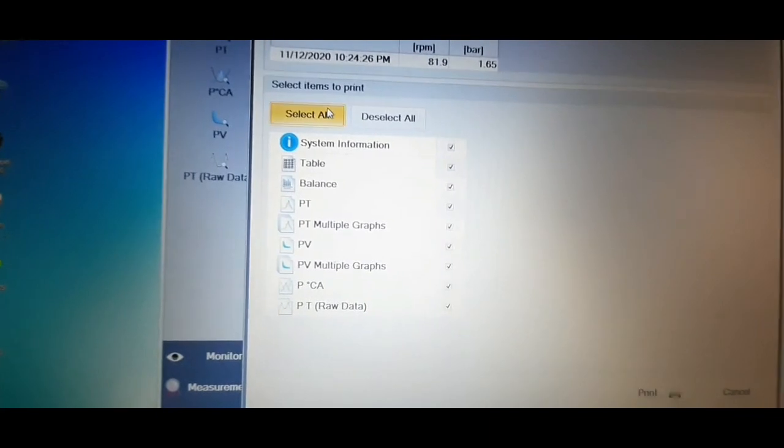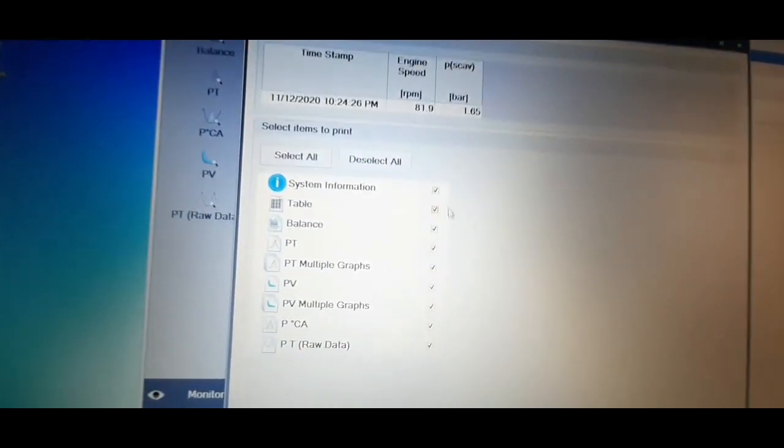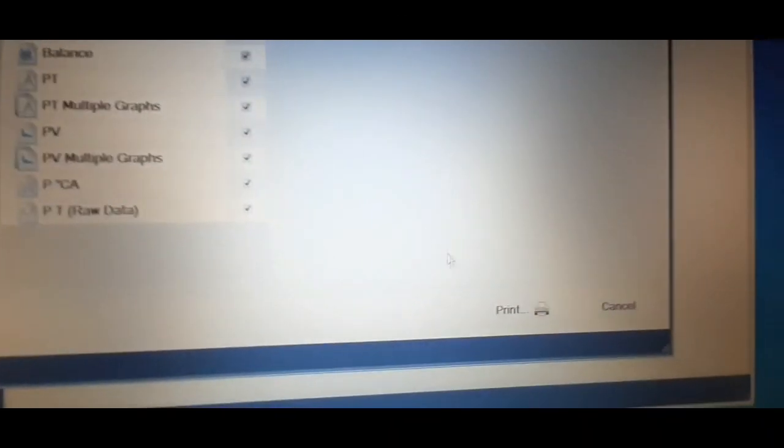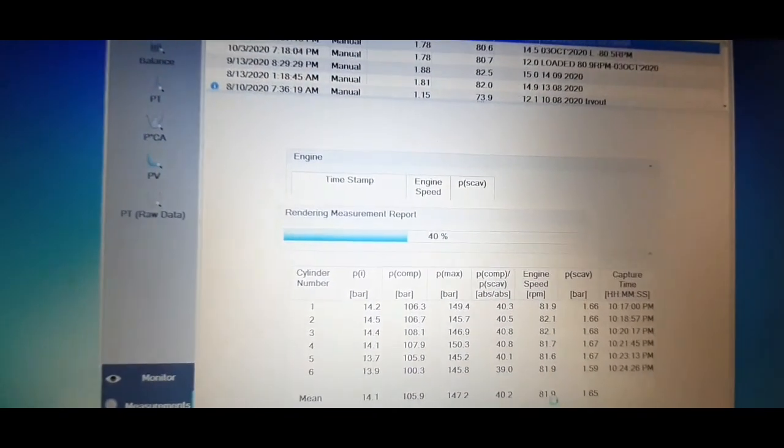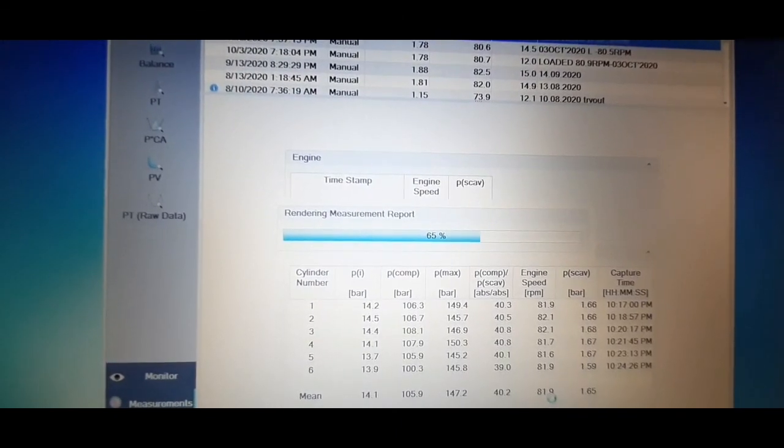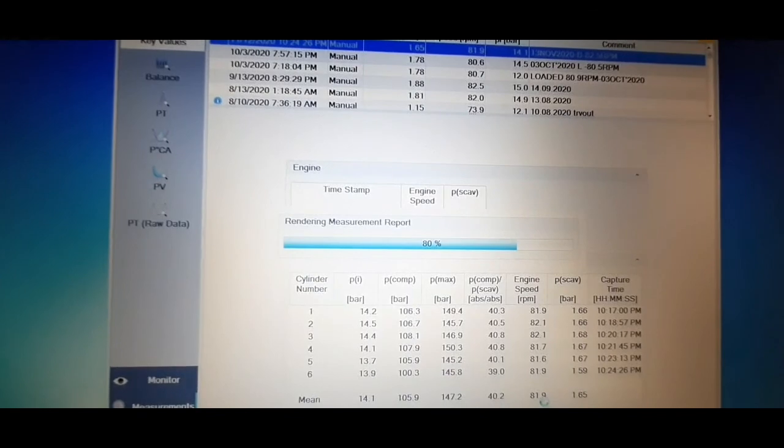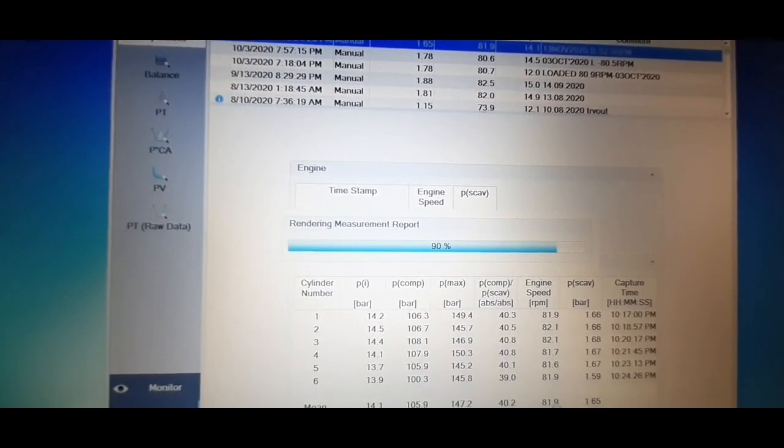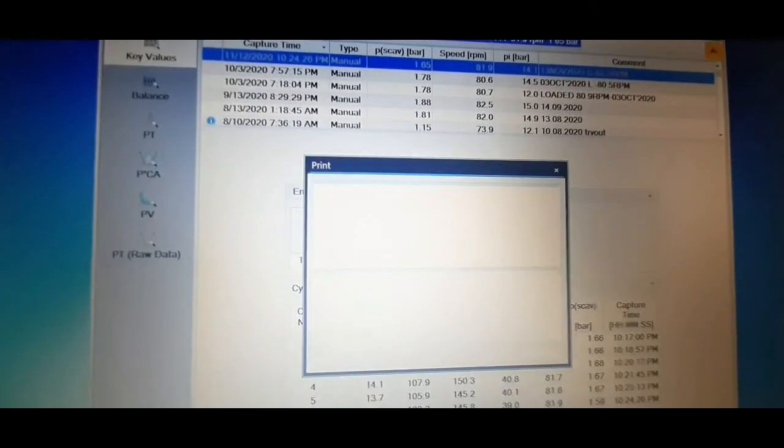Then select print on the right corner of the page. The PMI software program will convert the readings to selected graphic pages. A print page will be displayed.